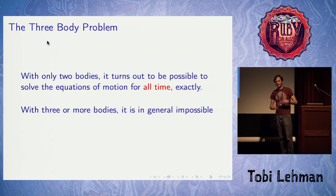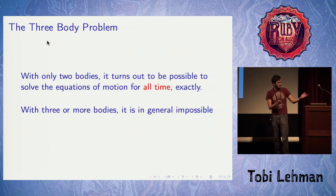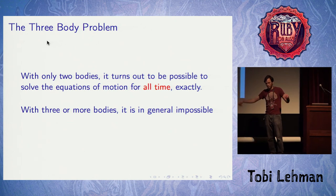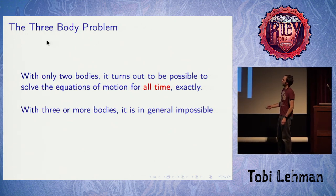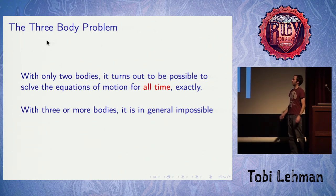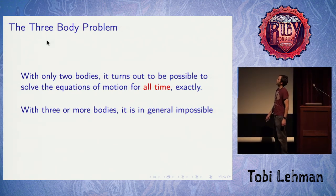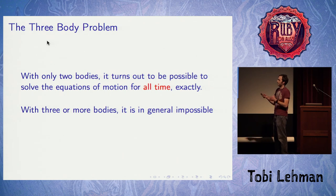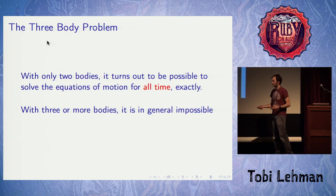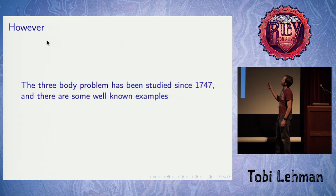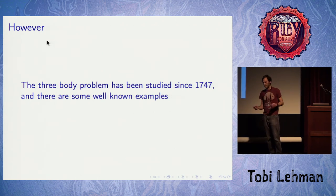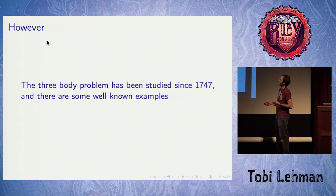So with only two bodies, it turns out to be really easy to solve in general — you don't even have to run a numerical simulation, you can actually solve it analytically so you know for all time the whole path of the body. But just by adding a third body to your universe, it turns out to be in general impossible to solve. The more bodies you add, the more rounding error and other things can cause your simulation to diverge from what would have actually happened in nature.